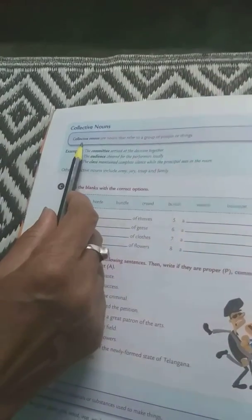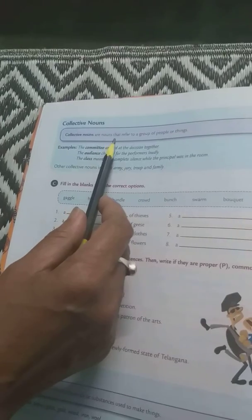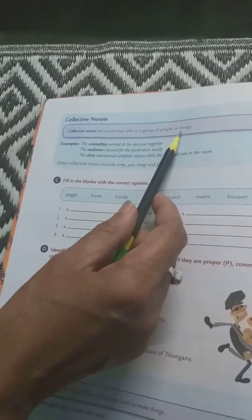Now we will start, what are collective nouns? Collective nouns are nouns that refer to a group of people or things.